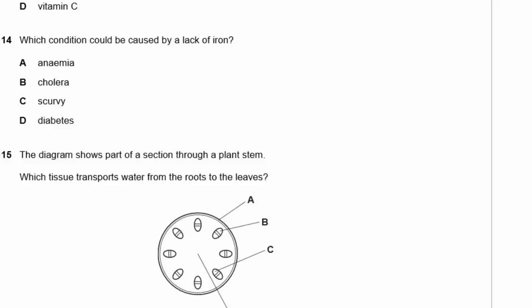Question 14: Which condition could be caused by a lack of iron? Anemia — yes, it can be caused by a lack of iron. Cholera is a bacterial disease. Scurvy is caused by lack of vitamin C. Diabetes is related to sugar and insulin. The answer is anemia.